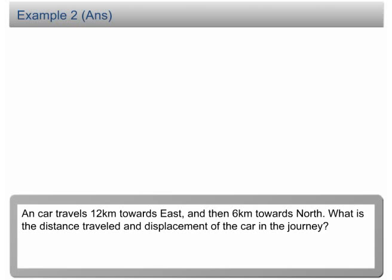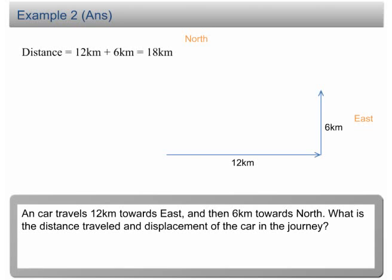From the question, we knew that the car traveled 12km east, 6km north, therefore the total distance traveled is 12 plus 6, which is equal to 18km.